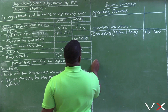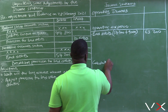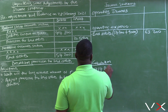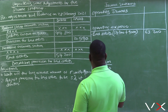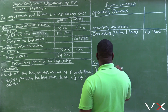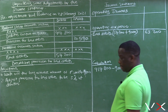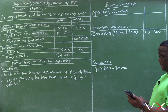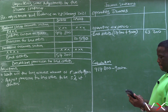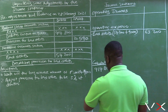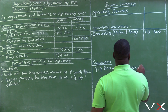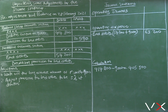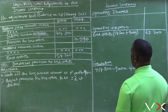For adjustment number two, the most important thing for students to remember is that debtors control has already been adjusted. The mistake students make is forgetting that debtors control is no longer 414,800. So 414,800 minus 9,000 equals 405,800 — that is the latest balance now for debtors control.